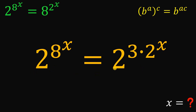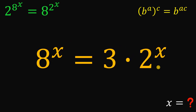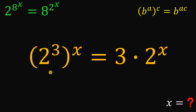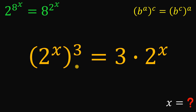We have equal expressions with the same base, therefore we can say that their exponents must be the same. So we have 8 raised to the power of x equals 3 times 2 raised to the power of x. Next, to solve this, again this 8 we can rewrite as 2 raised to the power of 3. Using again some laws of exponent — if we have b raised to the power of a raised to the power of c, we can rewrite this as b raised to the power of c raised to the power of a, interchanging the exponents. So the left-hand side we can rewrite as 2 raised to the power of x raised to the power of 3.